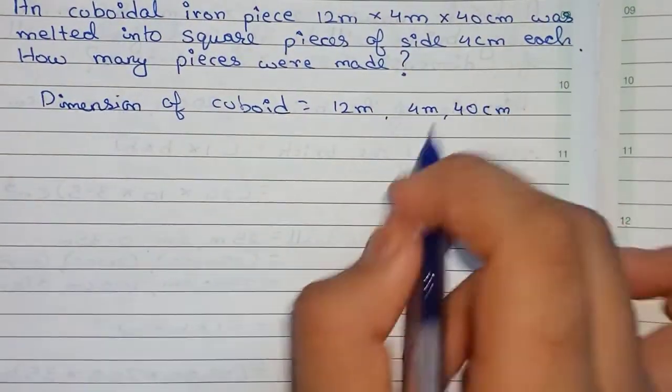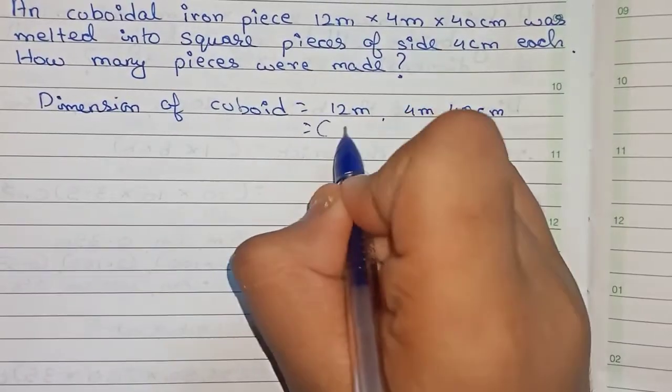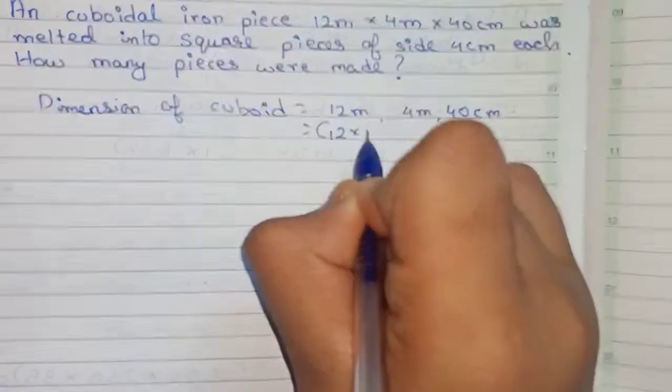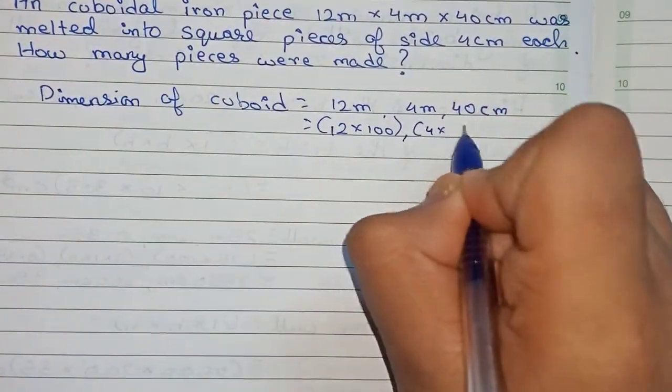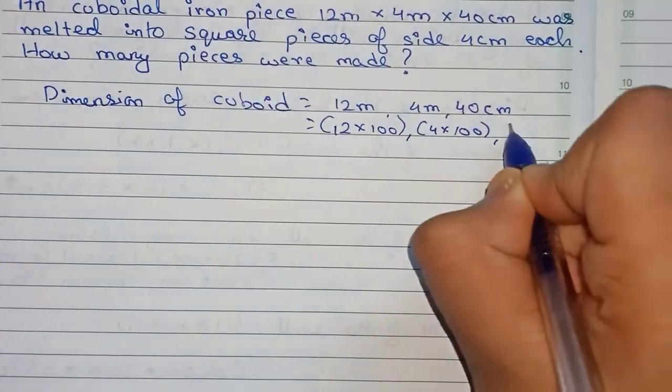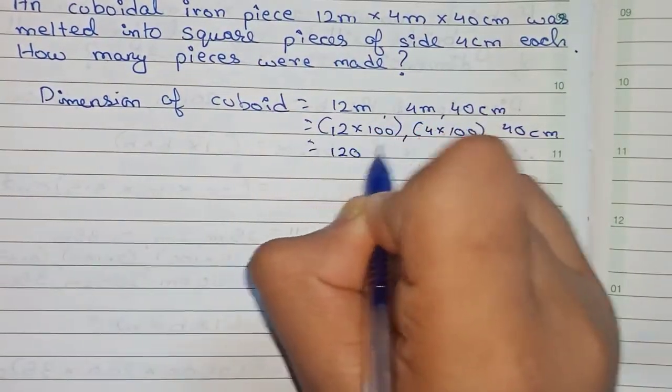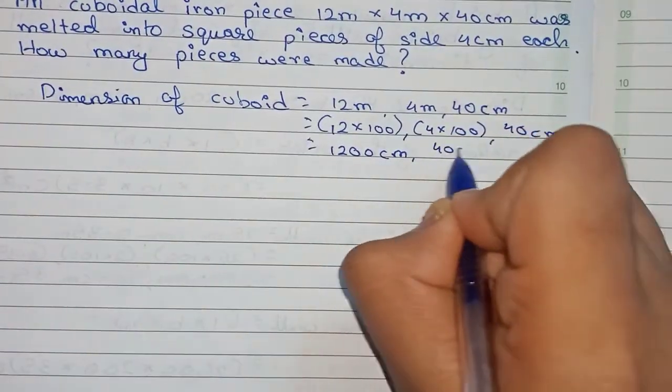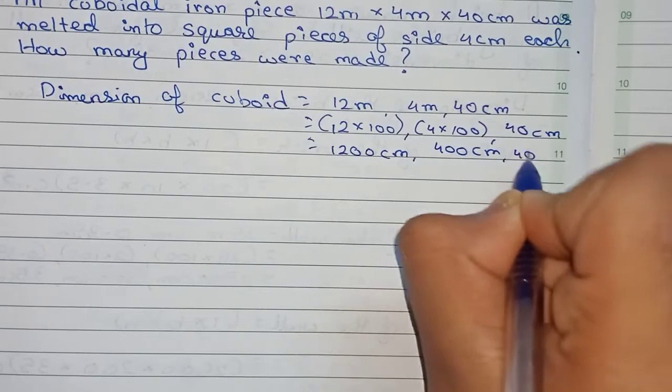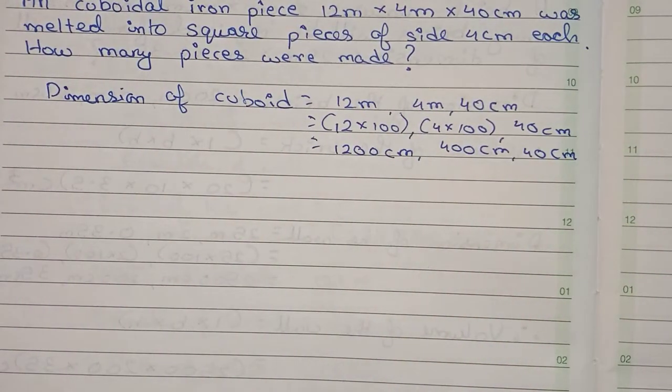So we convert 12 meter and 4 meter into centimeter, which will equal to 12 into 100 and 4 into 100, 40 centimeter. To convert to centimeter, multiply by 100. So which is equal to 1200 centimeter, 400 centimeter, and 40 centimeter. So this is the total dimension of the cuboid.